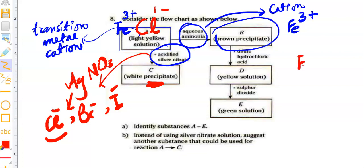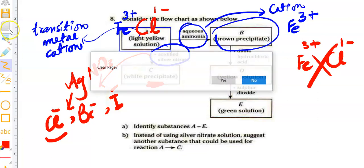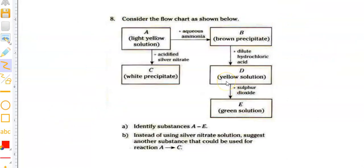Now we need to make formula for it: Fe³⁺ and Cl⁻ and we get FeCl₃. So we identify solution A. Yellow color solution A is FeCl₃. Now, come to the identification of B and then identification of C.